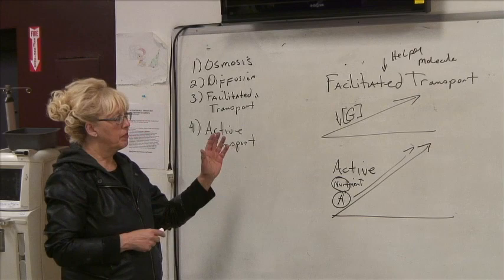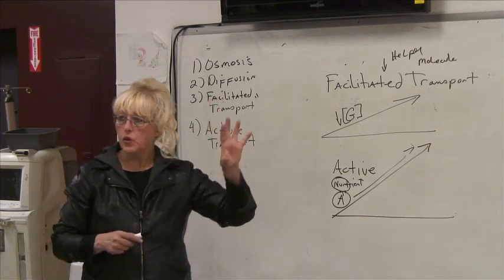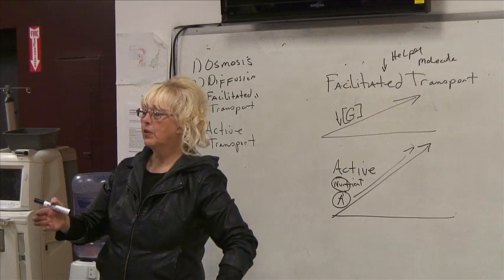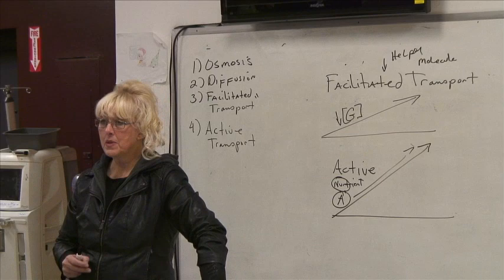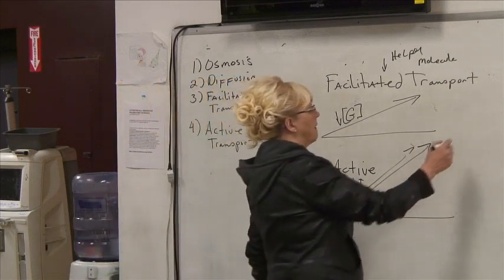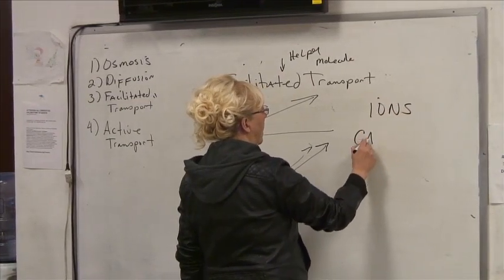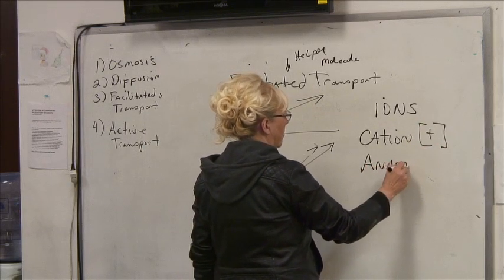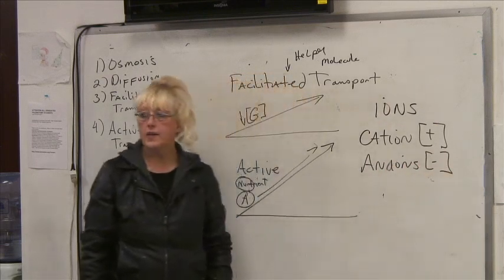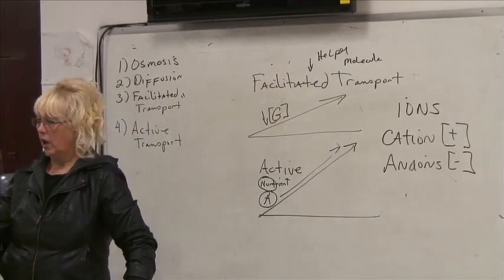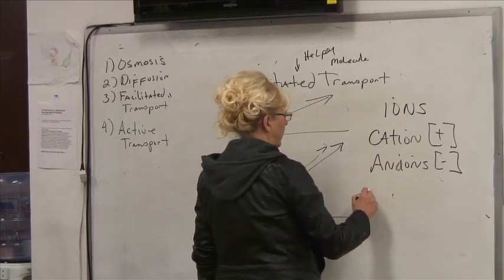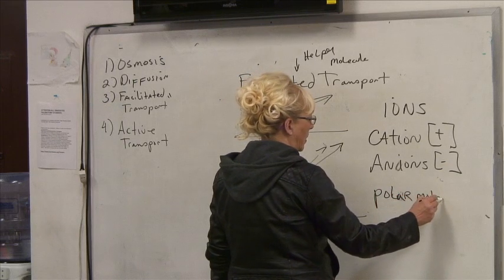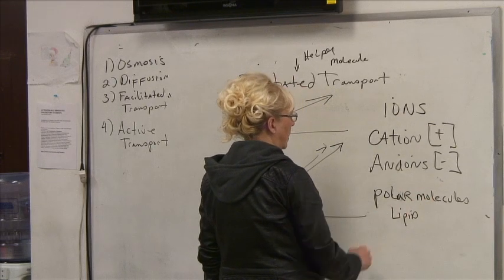All of this transport is taking place within the tubules, within the glomerulus. There's a lot going on. Now, we haven't talked about the charges of different molecules. When we talk about ions, we have two kinds: cations, which carry a positive charge, and anions, which carry a negative charge. And then we have polar molecules — they have no charge, and are lipid compatible.